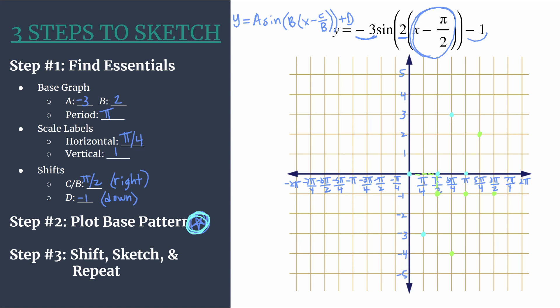So your final graph should have the same shape as your base pattern graph from step two. It should just be horizontally and vertically shifted. So let's sketch in this nice sine curve. All right, and there we have one cycle of our graph.